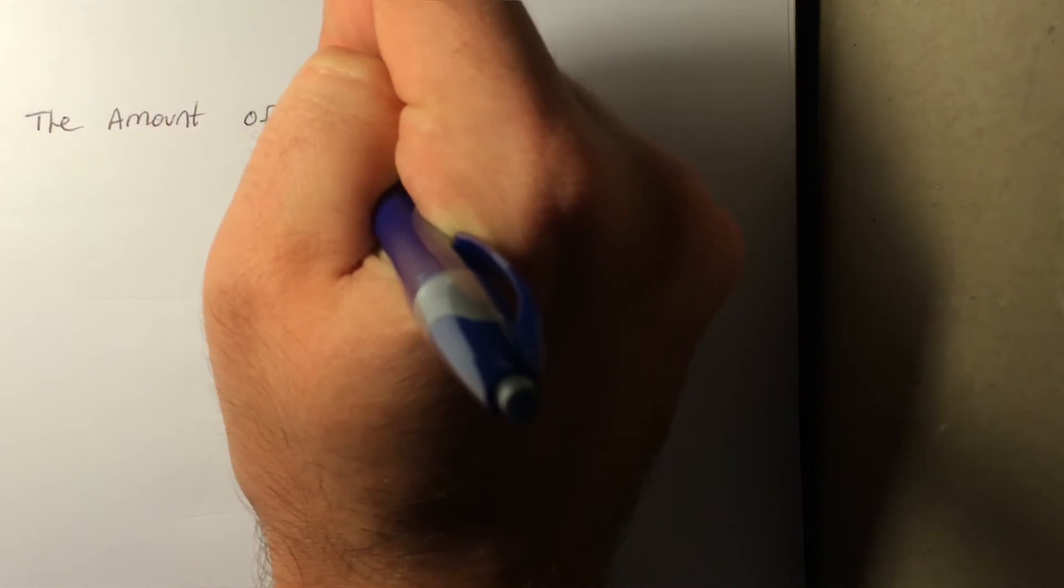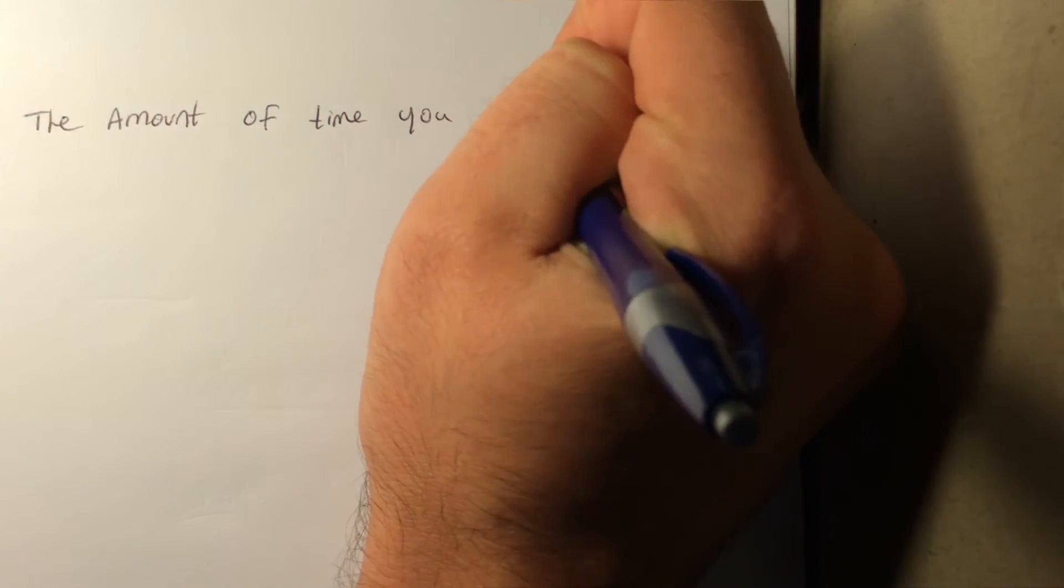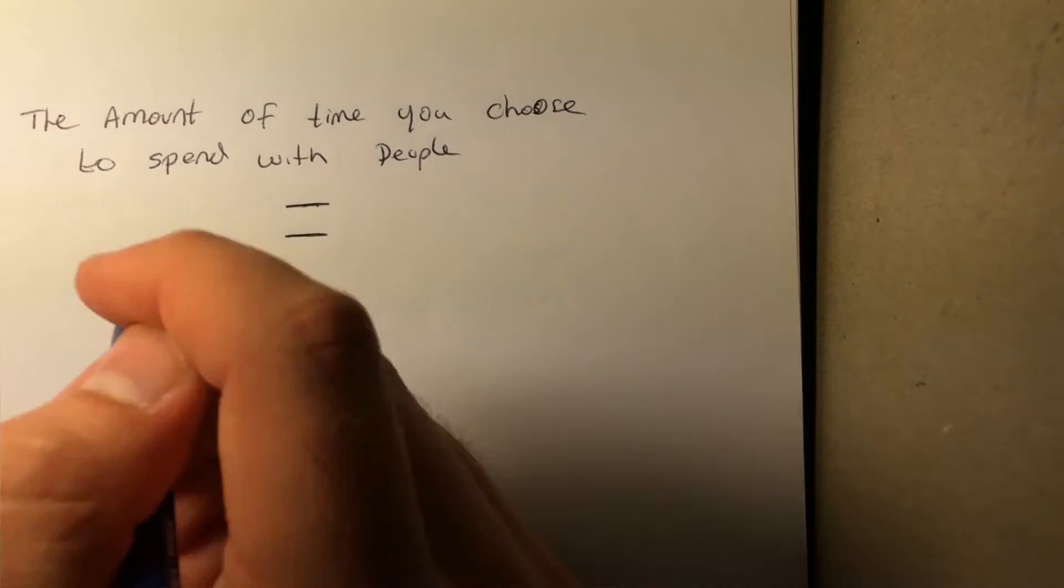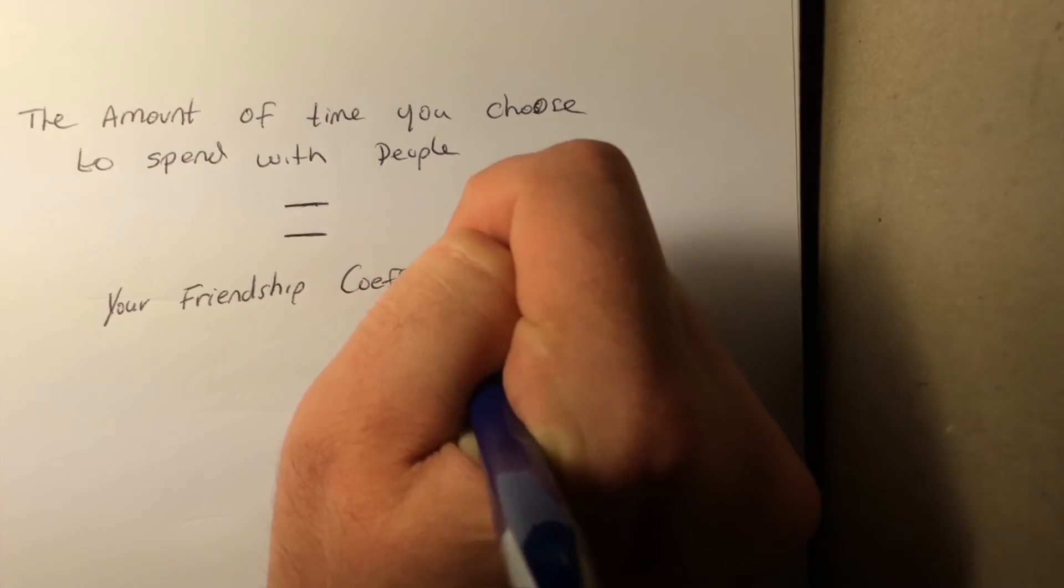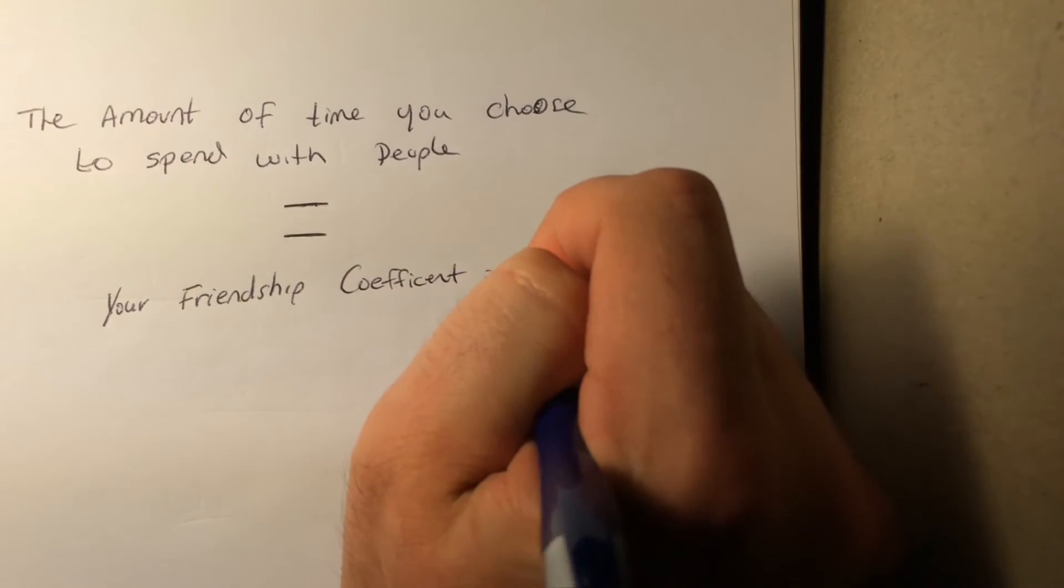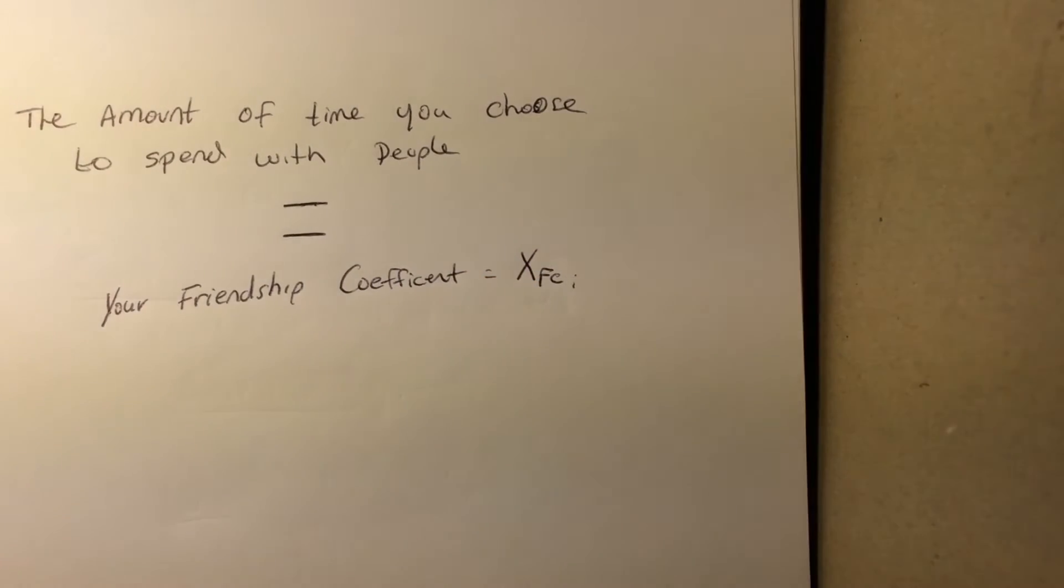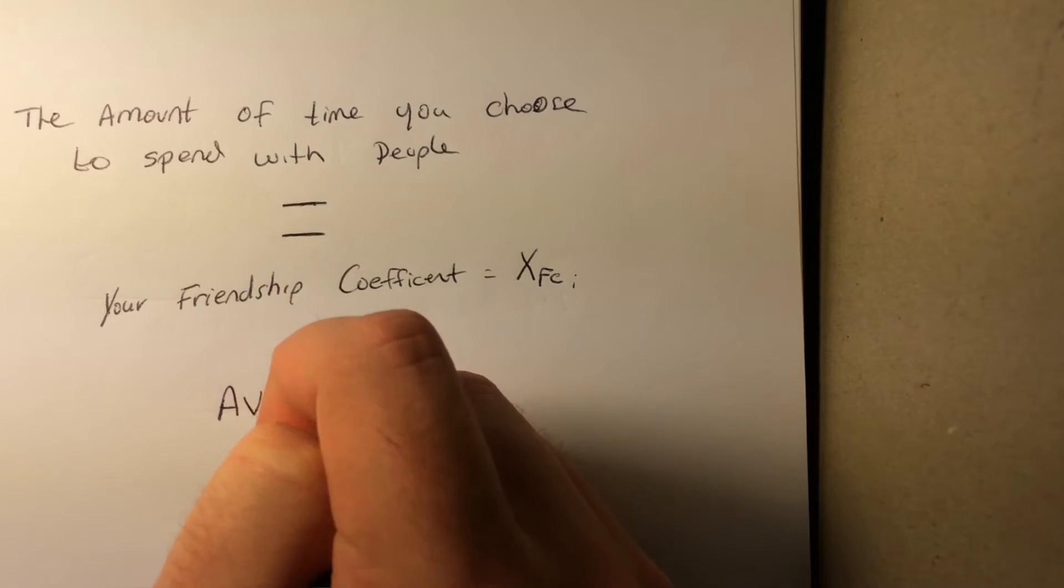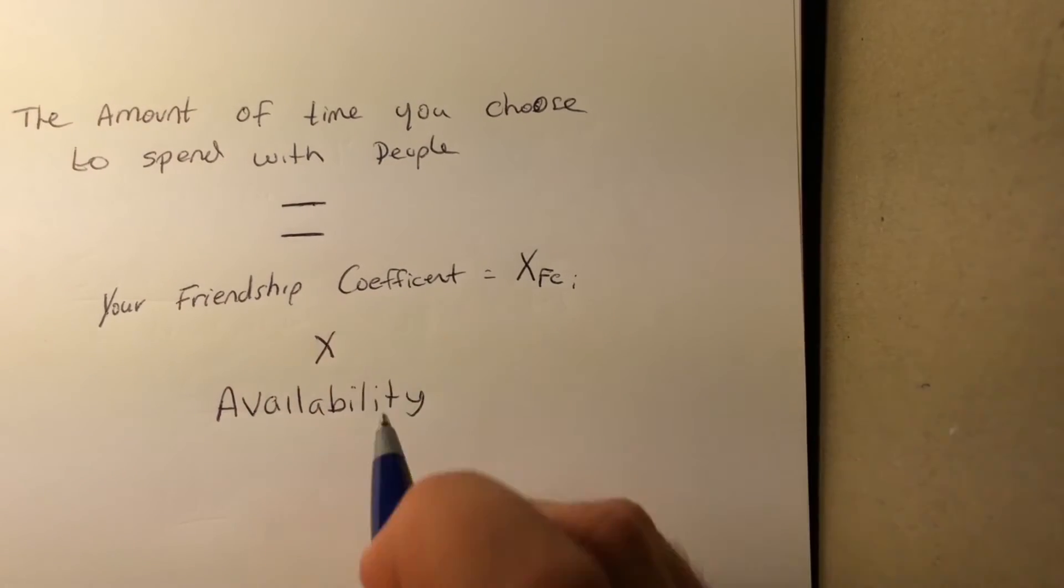See, I have a formula that who you choose to hang out with is actually the function of two separate component formulas. The first part is what I call your friendship coefficient. It's going to be represented by x to the fc. This indicates how close of a friend you are with somebody. And the second portion is availability.